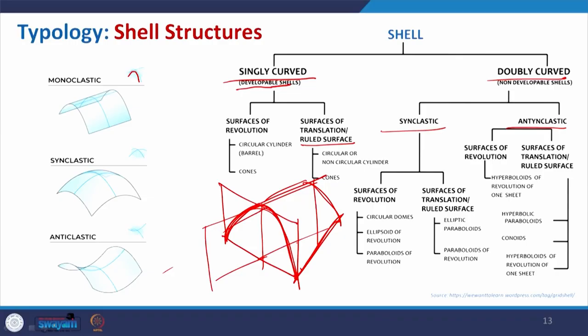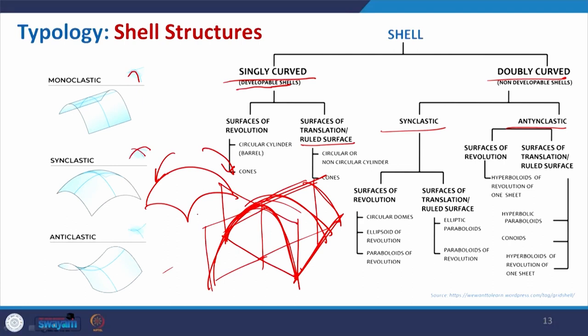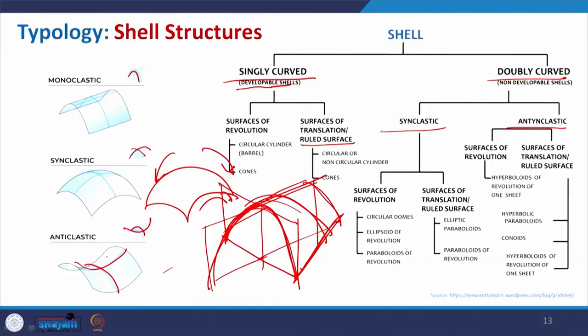Coming to synclastic: now it is not only one direction but the other direction also has curvature. So basically if you curve a surface in both the x-direction and y-direction in the same fashion — anticlockwise or clockwise in one particular direction for both curvatures — you get the synclastic form. Coming to anticlastic: similar to the other one you have curvature in this direction, but the other one is in the opposite direction. So one is convex and one is concave — when they merge together they form the anticlastic.